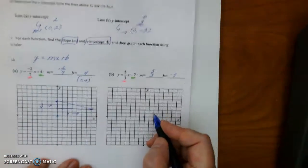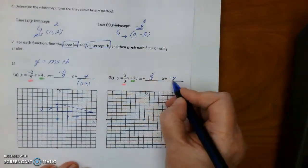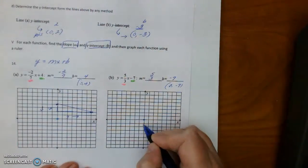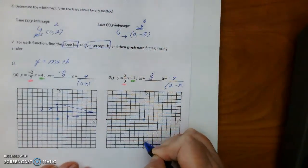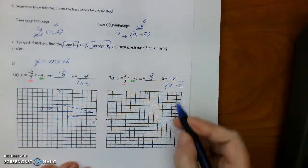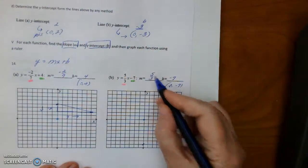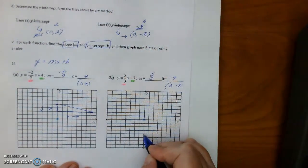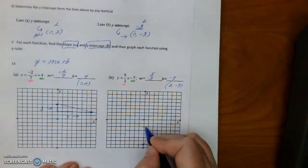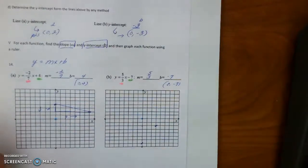Then here we are going to do 0, negative 7, 1, 2, 3, 4, 5, 6, 7, and then we are going to go up 5, 1, 2, 3, 4, 5, and then over 3, 1, 2, 3, okay?